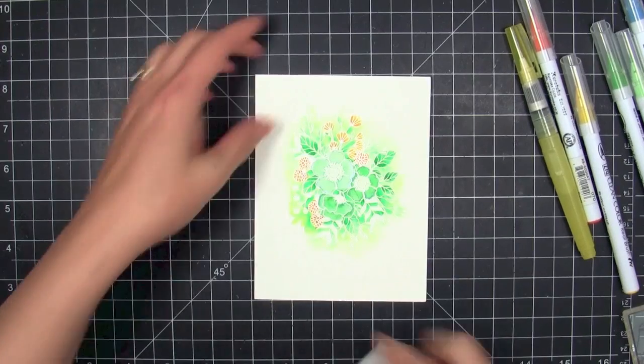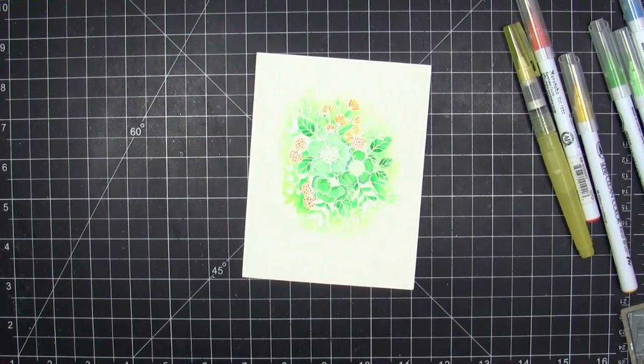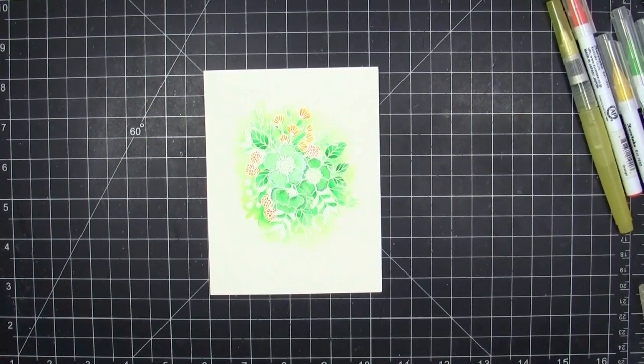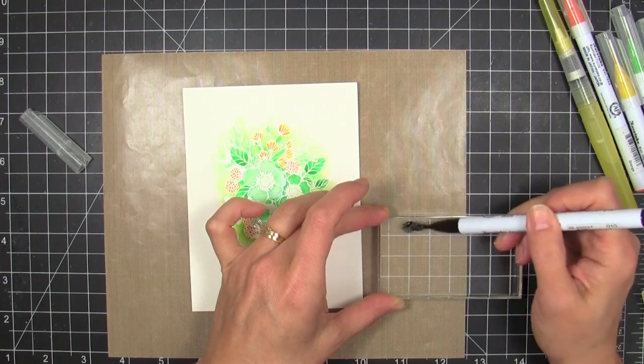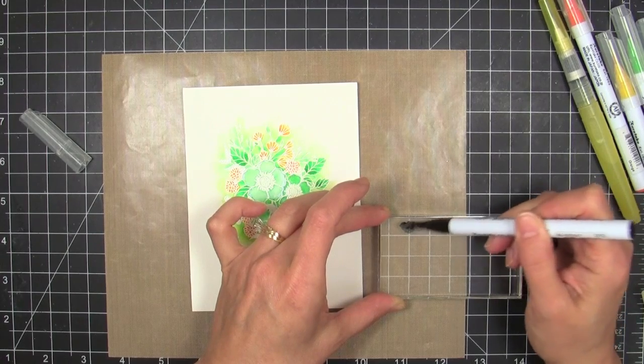And then I can just take my paper towel and blot over the top. Any color that's sitting on the embossing lines will just get absorbed into that paper towel. I just make sure that I'm not smearing or rubbing. I'm tapping over the top so I don't contaminate what I've colored so prettily.